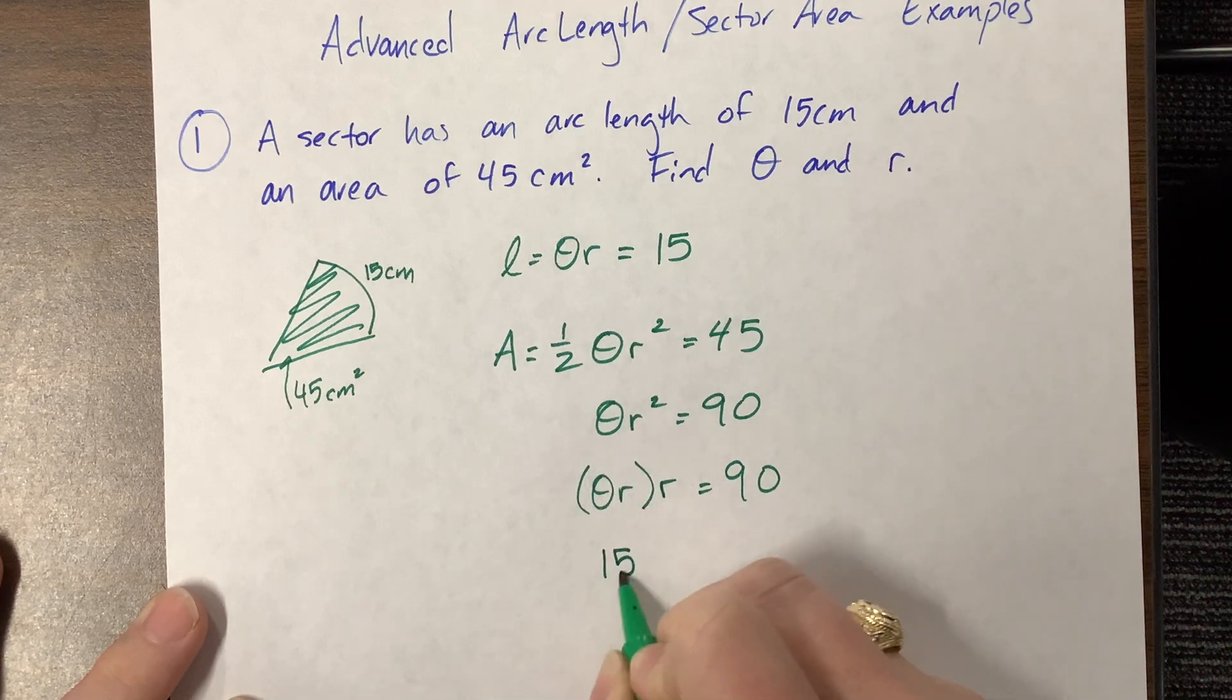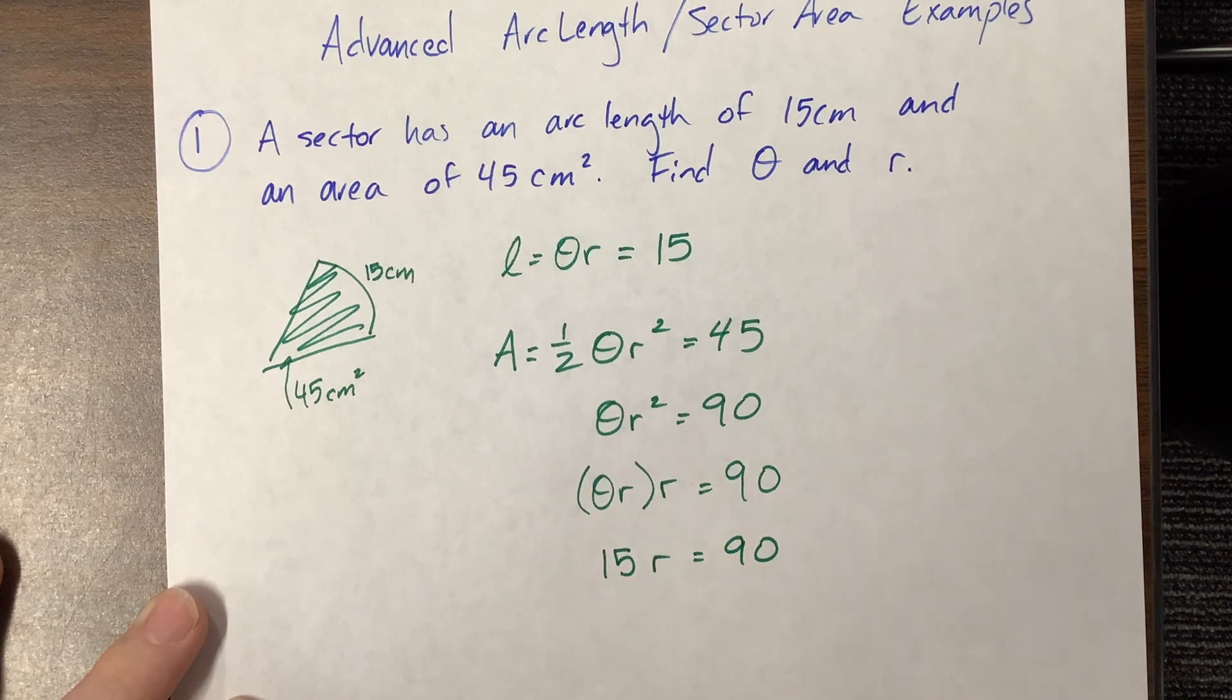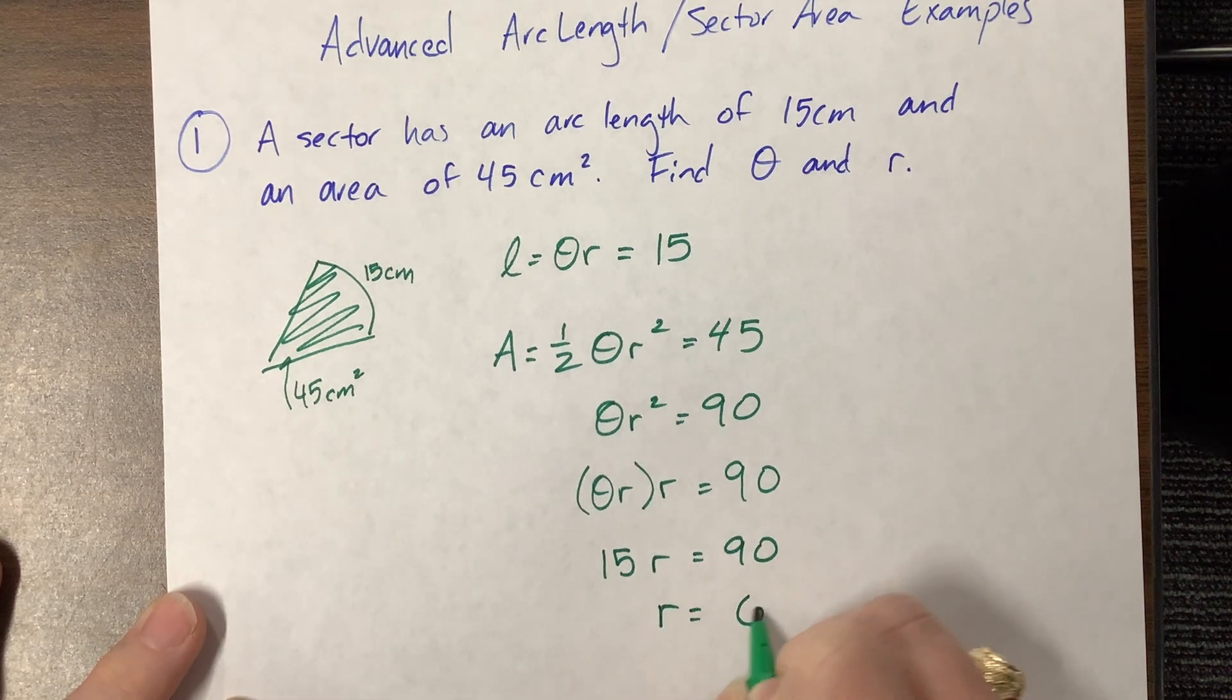I'm substituting that in and I can say that 15r is equal to 90 and therefore when I divide I know that r is equal to 6.